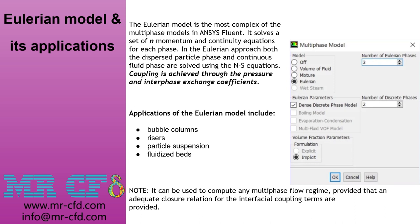The Eulerian model solves a set of n momentum and continuity equations for each phase. In the Eulerian approach, both the dispersed particle phase and the continuous fluid phase are solved using the Navier-Stokes equation. Coupling is achieved through the pressure and interphase exchange coefficients. Applications include bubble columns, risers, particle suspension, and fluidized beds — though these are only a few. Any multi-phase flow regime can be computed provided adequate closure relations for interfacial coupling terms are provided.